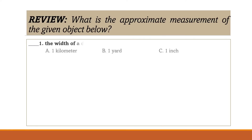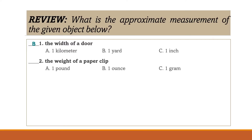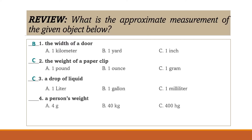I will be showing you some objects and we are going to approximate the measurement of each. For number one, what is the approximate measurement of the width of a door? The answer is B, one yard. How about the weight of a paperclip? Its weight is approximately one gram. A drop of liquid is approximately one milliliter. A person's weight is approximately 40 kilograms. And the capacity of a bottle of cola is approximately one liter, so the answer for number five is letter A.